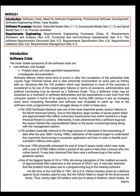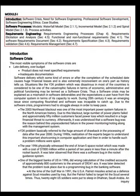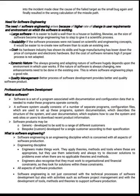One of the biggest banks in the US in 1996 did wrong calculations of the credited accounts of approximately 800 customers to the amount of $9 to $41. It was later detected that the problem took place due to a programming bug in the banking software. At the time of the Gulf War in 1991, the USA Patriot missiles acted as a defense against SCUD missiles used by Iraq, but the Patriot failed to hit the SCUD several times. Thus 28 US soldiers were killed in Dharan, Saudi Arabia. An enquiry made clear that the cause of the failed target was a small bug which resulted in the wrong calculation of the missile path.